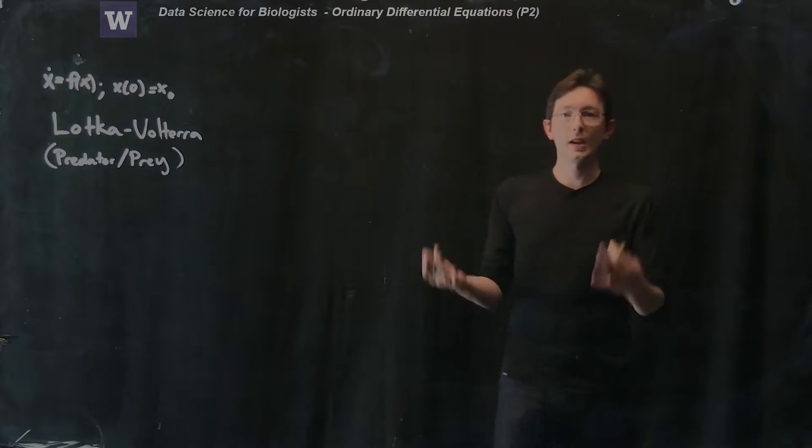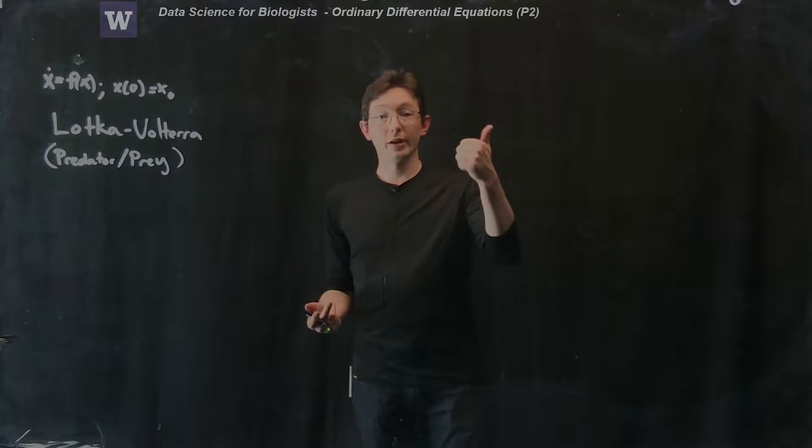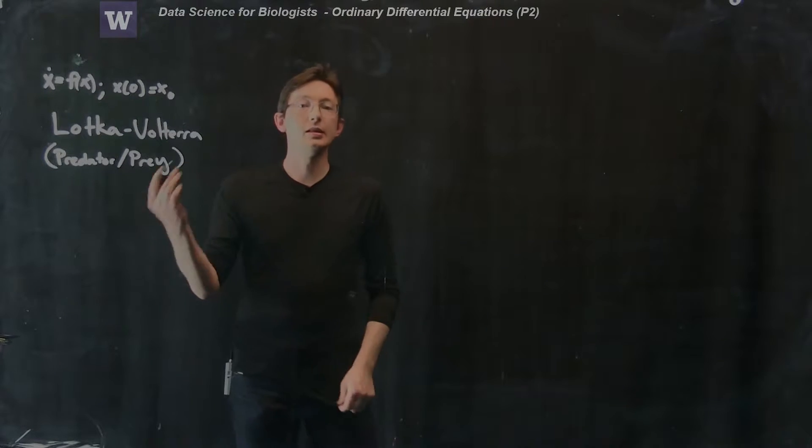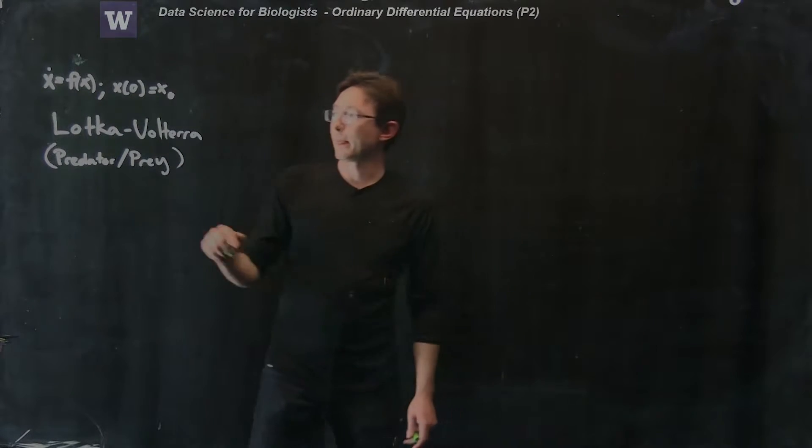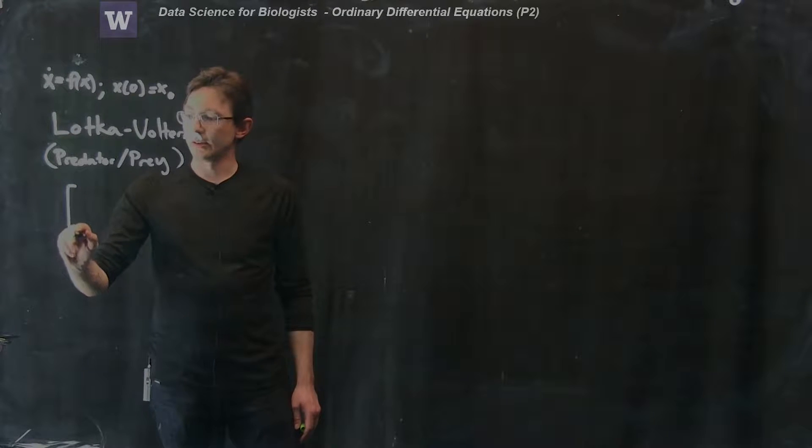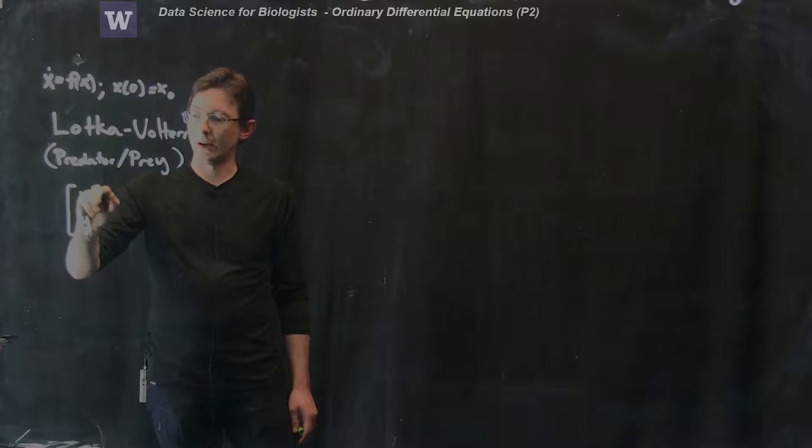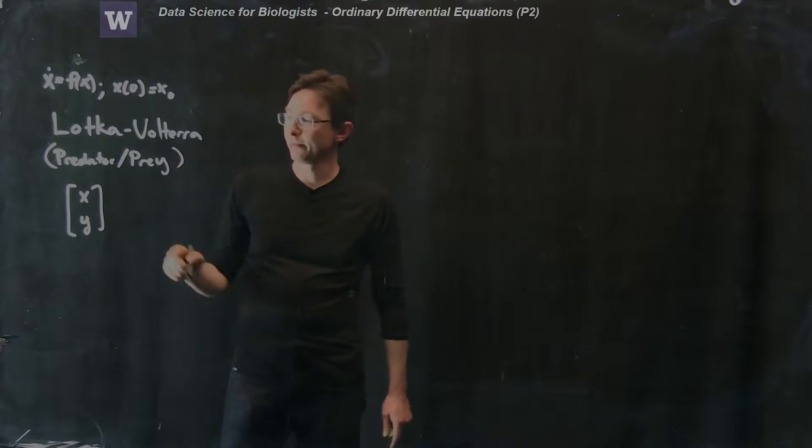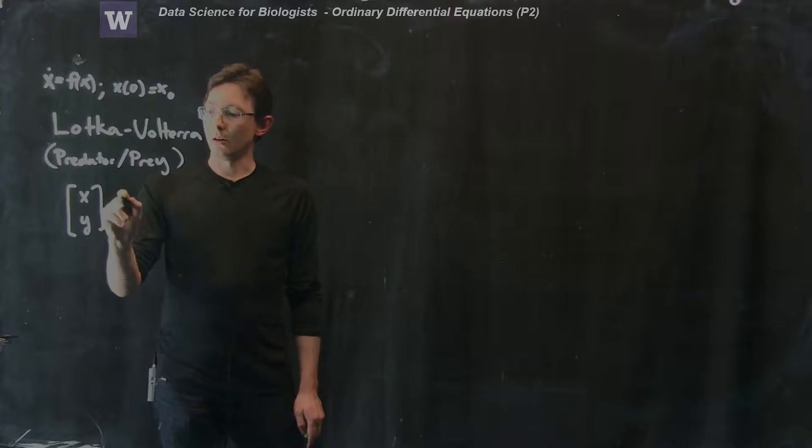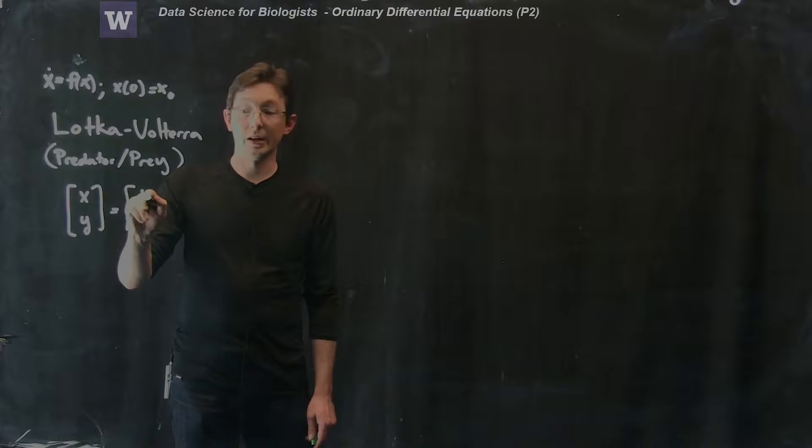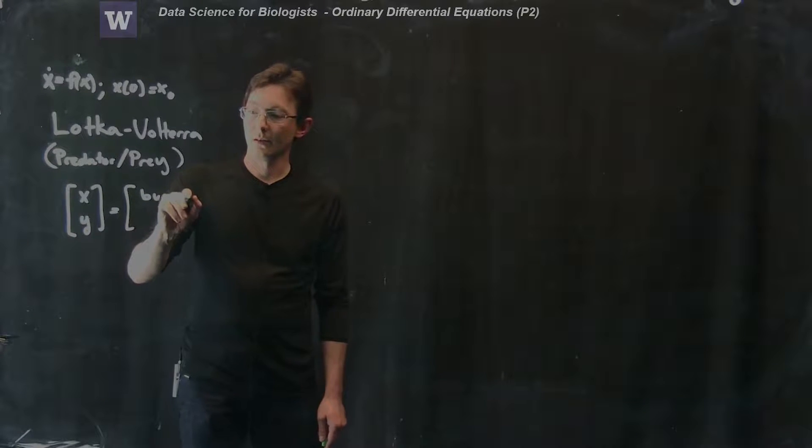We're going to set up a model where we have a predator species and a prey species, so I like to think of bunnies and wolves. My state is going to consist of X and Y. This is my vector state. X and Y are the population of bunnies and the population of wolves.